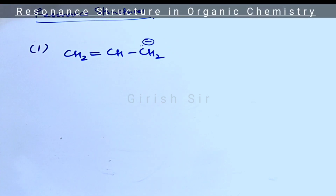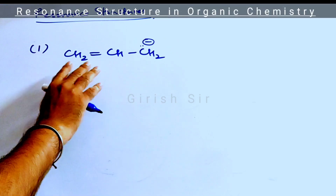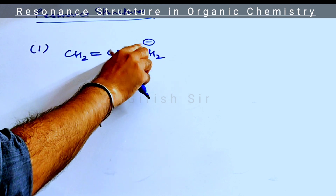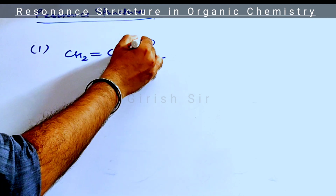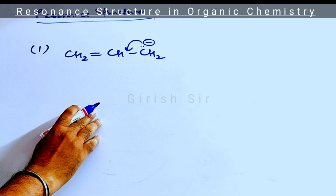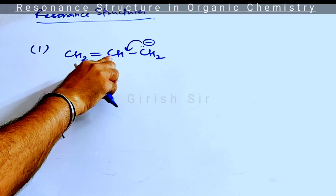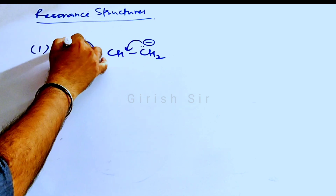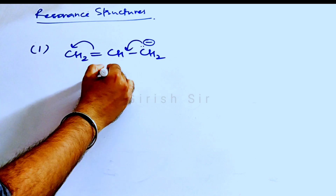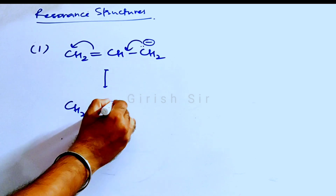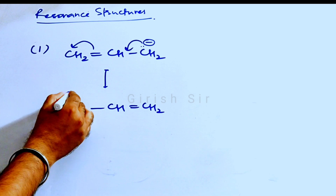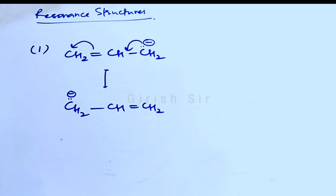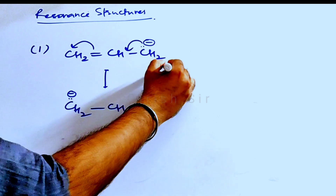Look at this first example. In this case, this carbon has a lone pair, and this lone pair will move towards a pi bond. Now, as this carbon must maintain tetravalency, this pi bond breaks and this resonance structure is obtained. So for this molecule, two resonance structures are possible.